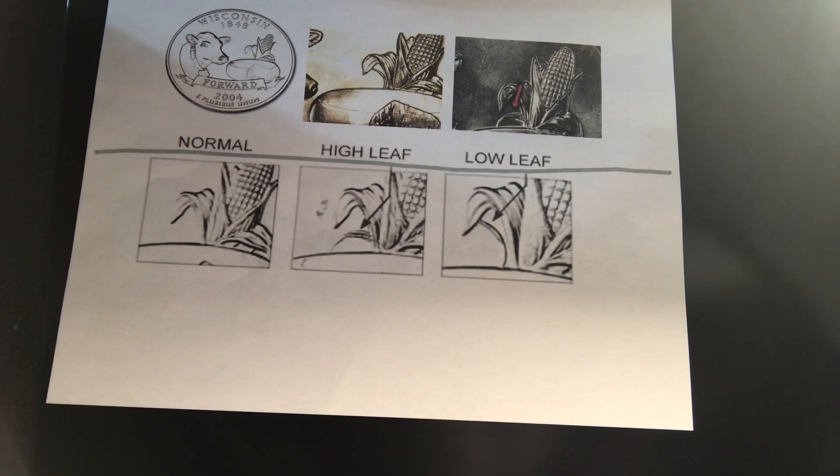The 2004 Wisconsin Extra Leaves Quarters are the only major variety in the entire state quarters program. 2004 Denver Wisconsin had a mintage of over 226 million coins, but only a few were found with this variety.